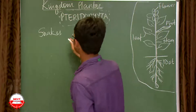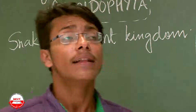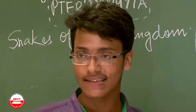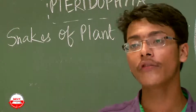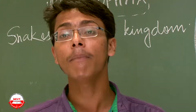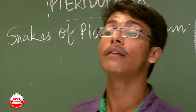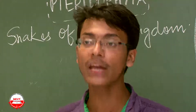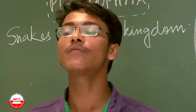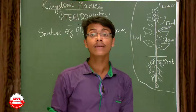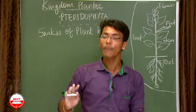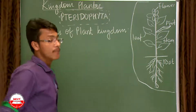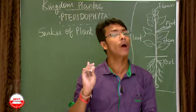Pteridophytes are called the snakes of the plant kingdom because, just as snakes cannot walk and crawl on the ground, most members of Pteridophyta cannot grow straight — the majority need support for their growth. They have tender stems, while roots and leaves are normal as in higher plants.